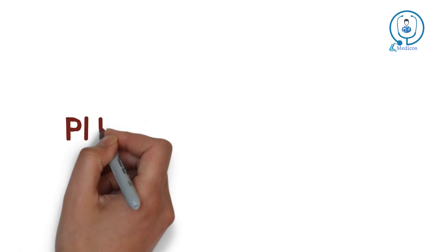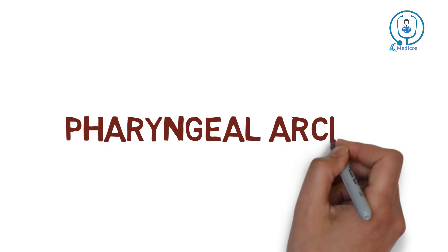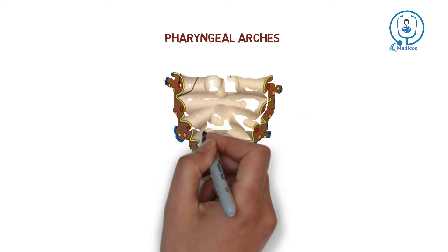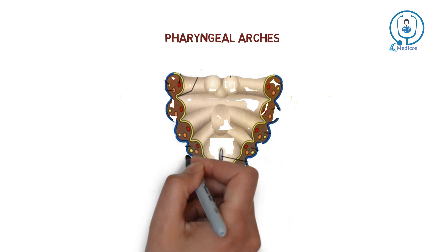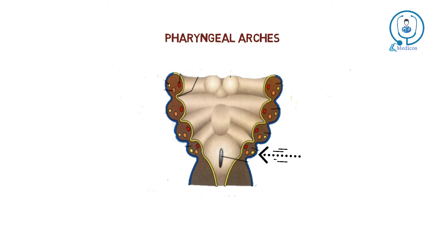Now let's come to the embryology of the ear. We need to understand the pharyngeal arches. There are five pharyngeal arches: first, second, third, fourth, and sixth. The fifth one disappears soon after formation.